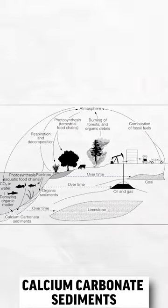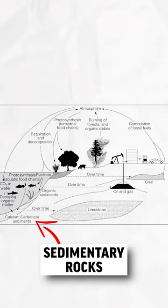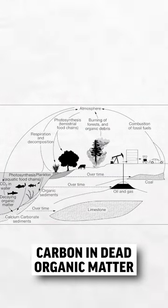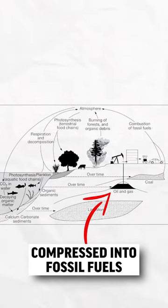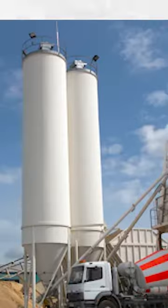Once carbon dissolves into the ocean, it can precipitate out as calcium carbonate sediments and become part of sedimentary rocks like limestone. Or that carbon in organic matter can become buried and compressed into fossil fuels over millions and millions of years.